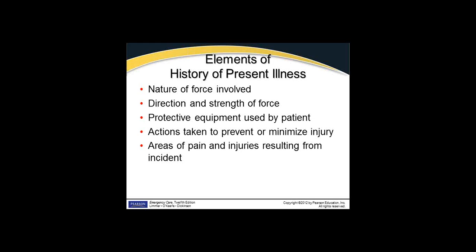Elements of our history of present illness for trauma: the nature of the force involved - trauma only occurs from energy or force, things like burns, falls, shootings, stabbings, car crashes. The direction and strength of the force - a fall is wide open for interpretation. I've seen people fall three, four, five, six stories, and then people who call it a fall where they really just slid out of their chair from sitting. There's a very big difference in the forces involved.